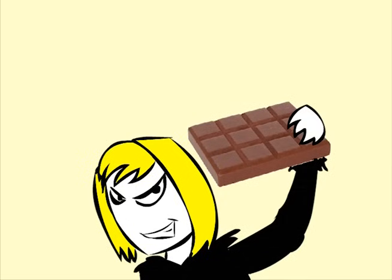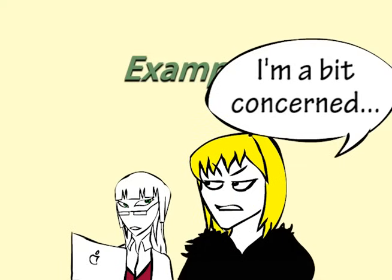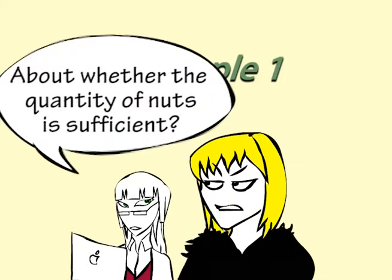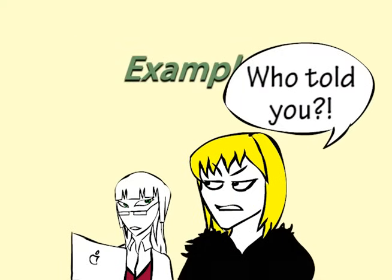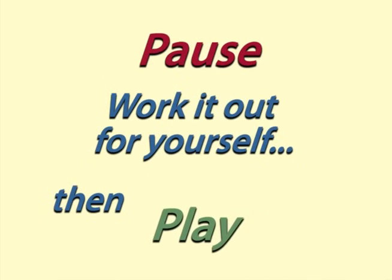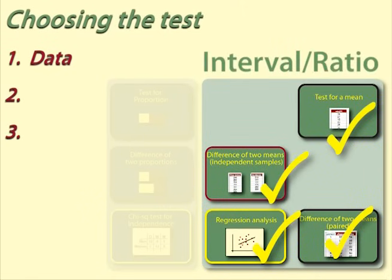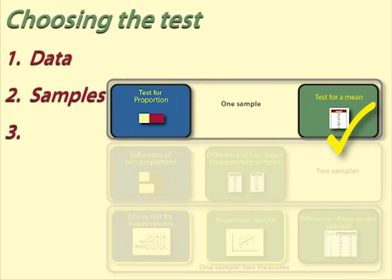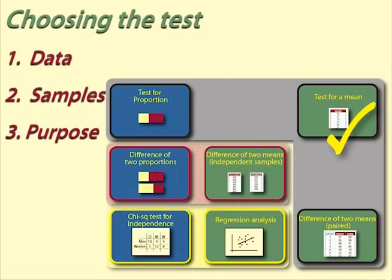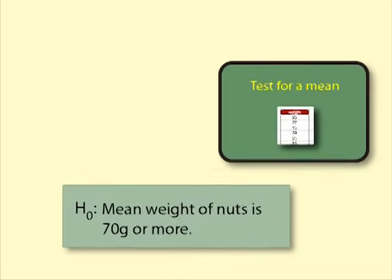Helen is still selling choconutties. Example 1: Sufficient nuts. Helen was concerned whether the quantity of nuts was sufficient in her choconutties. She took a sample of 20 packets and found the weight of nuts in each packet. Data: the weight was interval ratio data. Samples: there was just one sample of 20 packets of choconutties. Purpose: Helen was comparing against a given value. Thus, the test she needs to use is test for a mean.